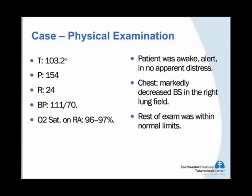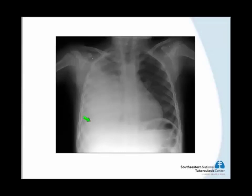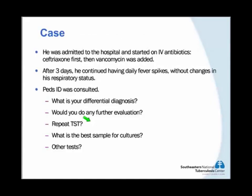In the ED, his temperature was 100.3, but he was not in any respiratory distress. He was awake and alert. His exam was remarkable for decreased breath sounds in the right lung field, but the rest of his exam was within normal limits. Based on this, the ED performed a chest x-ray. As you can see in this x-ray, two-thirds of the right lung are actually affected. There is pleural thickening and a pleural effusion, probably a large one. We can't really see how much of the lung parenchyma is involved. He also had a lateral decubitus x-ray to see if there was layering of the fluid and there was no layering. He was admitted to the hospital and started on IV antibiotics.